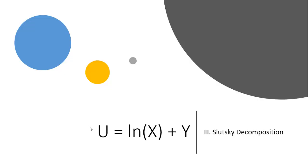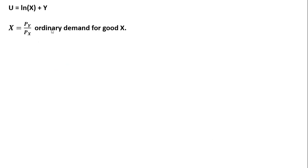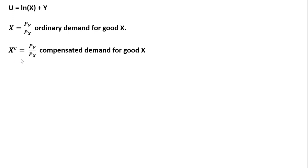In this third video on the quasi-linear utility function, we're going to do a Slutsky decomposition for good x. Here's our quasi-linear utility function. We found in an earlier video that the ordinary or Marshallian demand for good x is given by the price of good y divided by the price of good x. And we found that the compensated demand for good x was also given as the price of good y divided by the price of good x — exactly the same as the ordinary Marshallian demand.